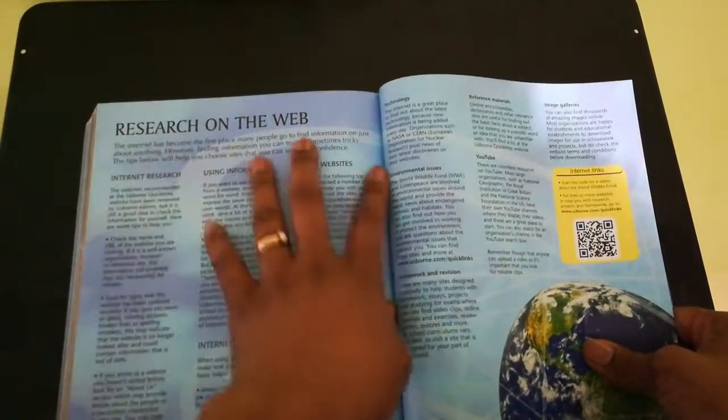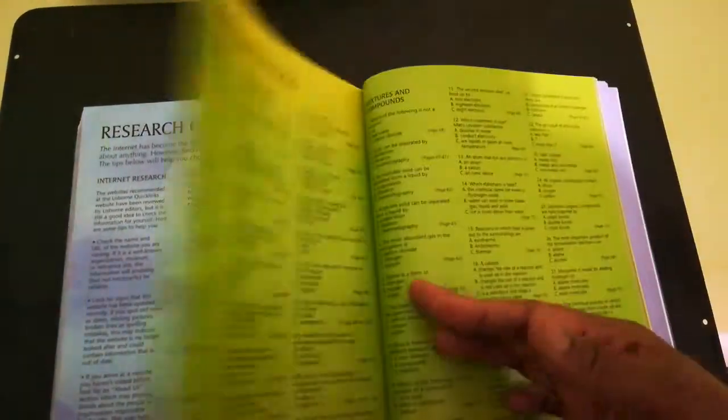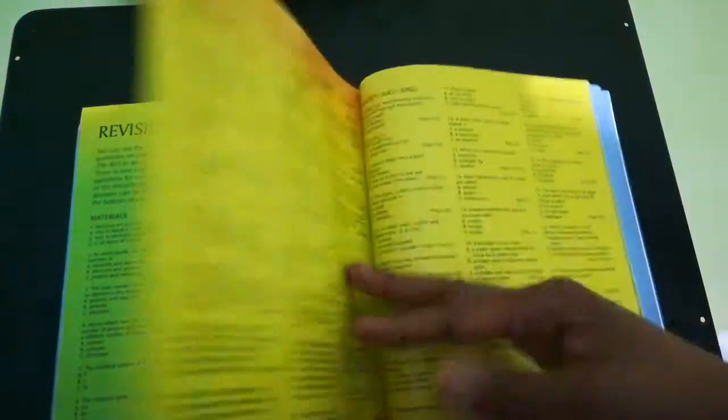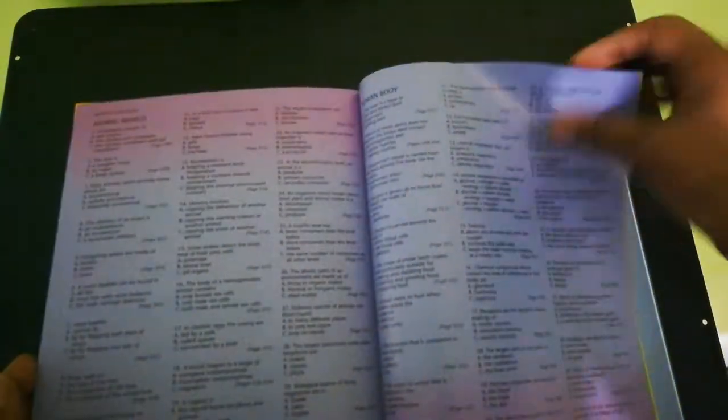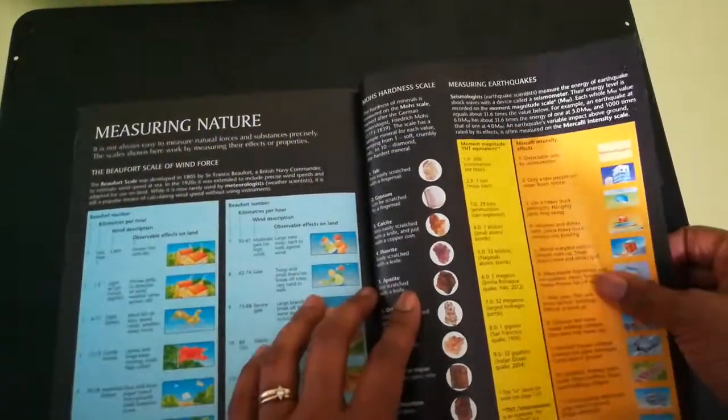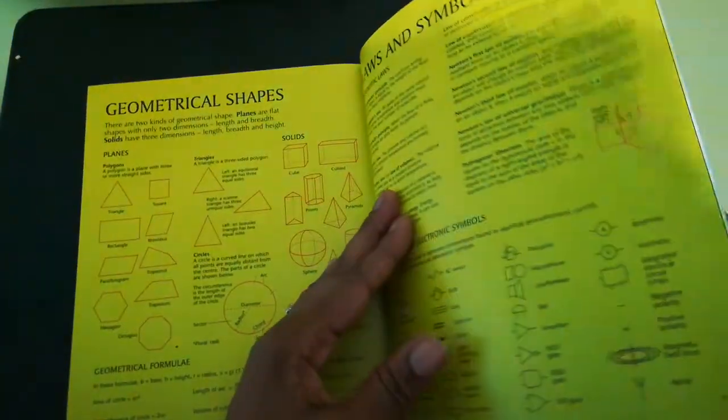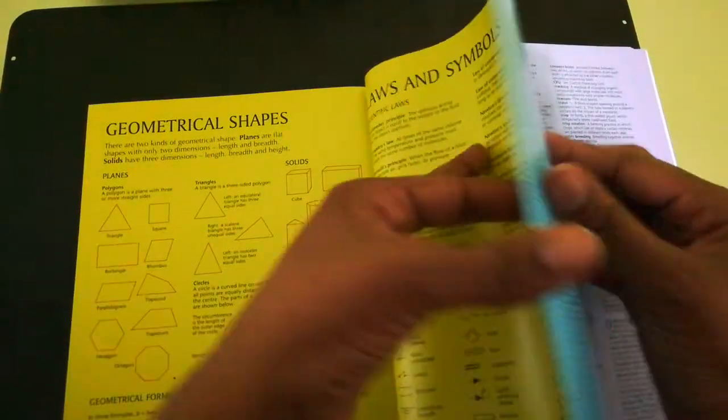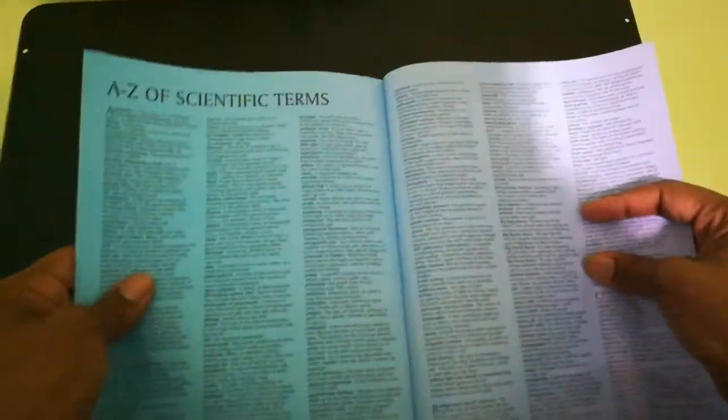We see the importance of researching on the web, different questions. They have different measurements. They break it down for you. They have geometrical shapes, laws, symbols. They even talk about different people who made a difference in science, different scientific terms.